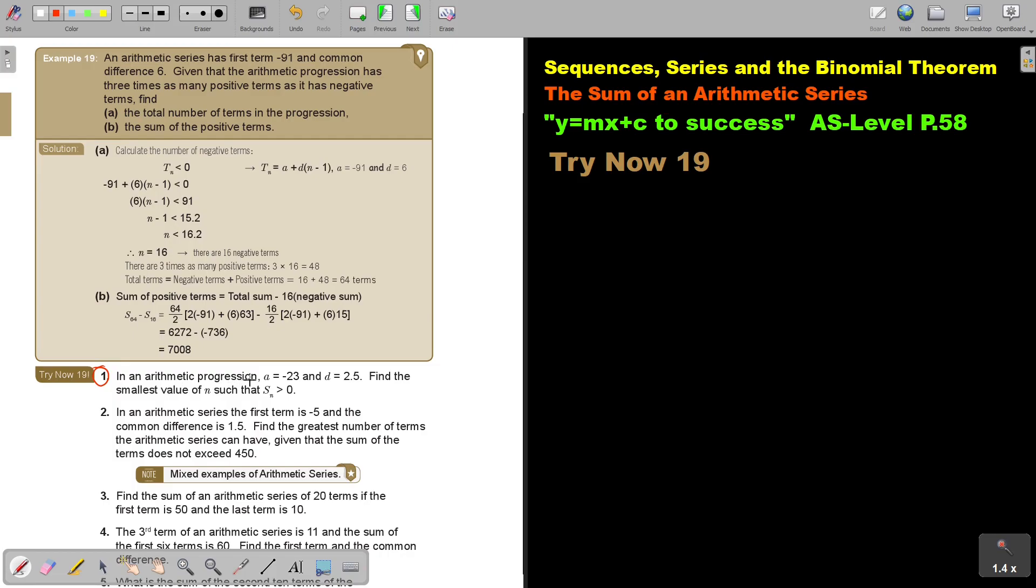In an arithmetic progression, they give you A, they give you D. Find the smallest value of N such that SN is bigger than 0. So it's now not TN, it's SN, the sum. I'm going to just start with that. But let's just first write all the information down.